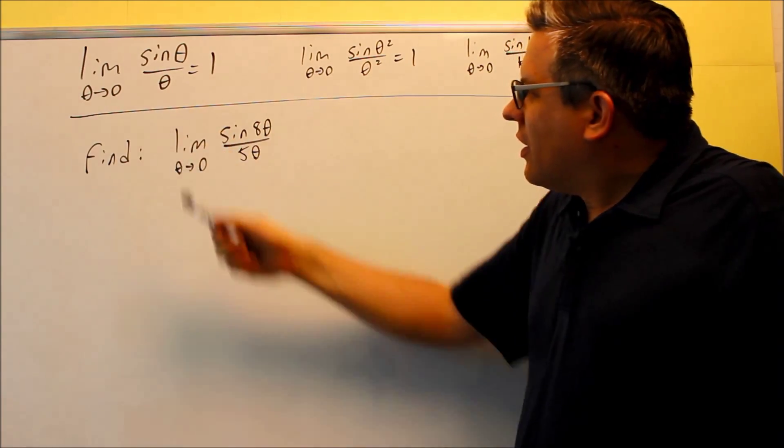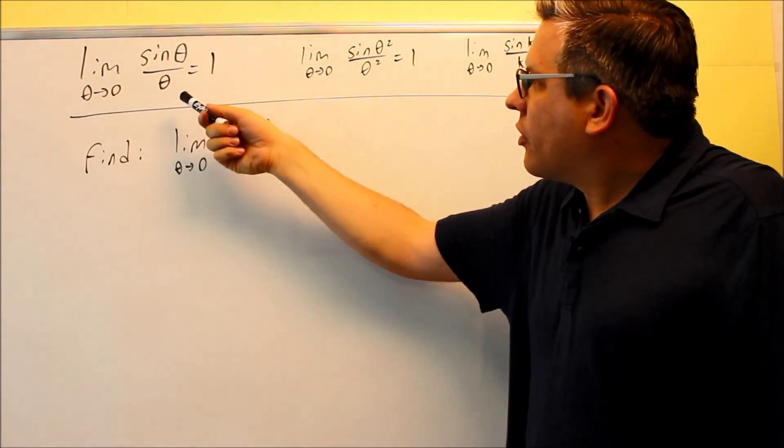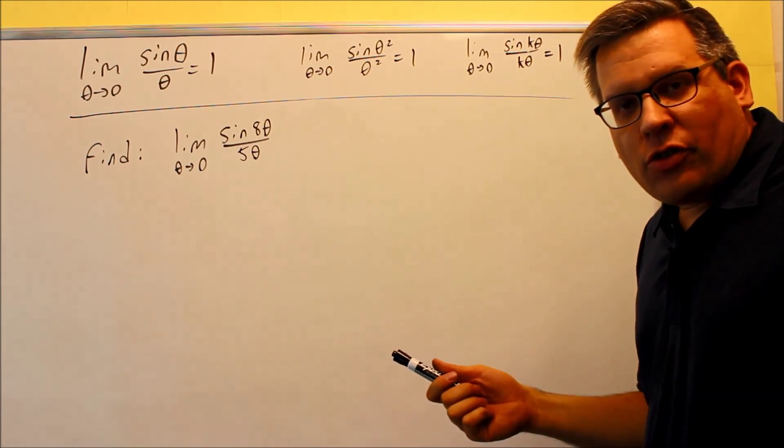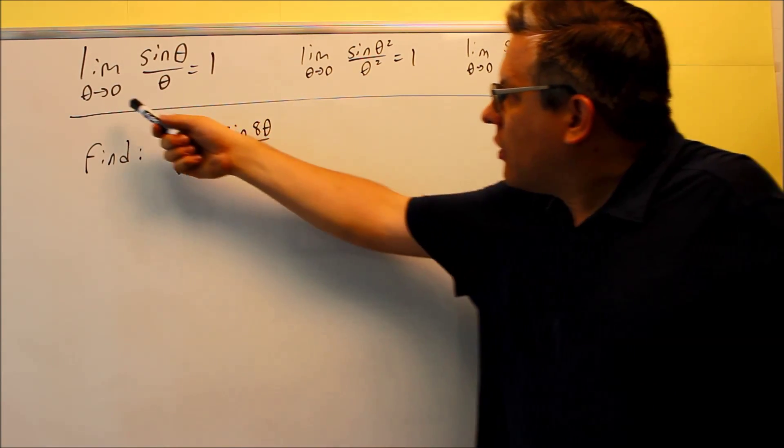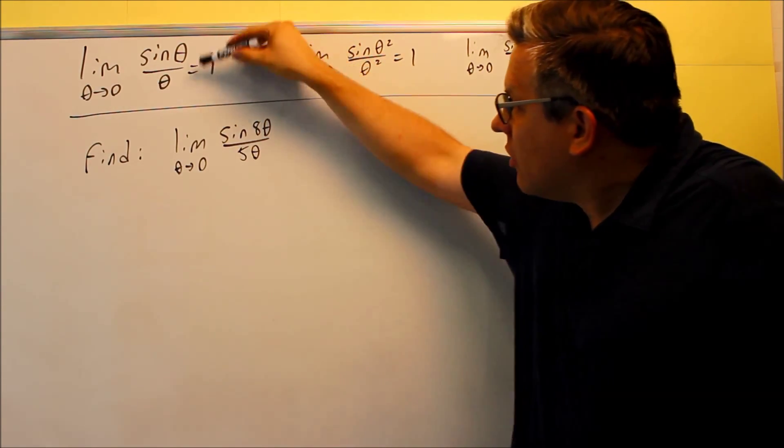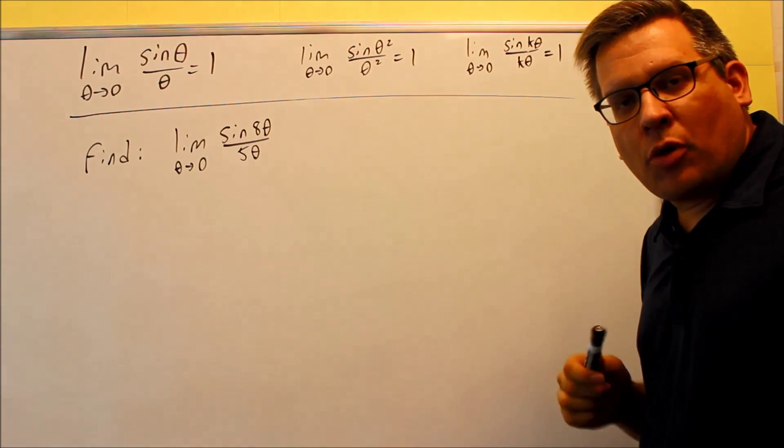The first one is this one: as theta goes to zero, sine theta over theta equals one. Where do we get that special limit from? From a graph. If you look at a graph and you look at theta going to zero from both the left hand side and the right hand side, you'll find that the y value is going to be approaching one from both sides.